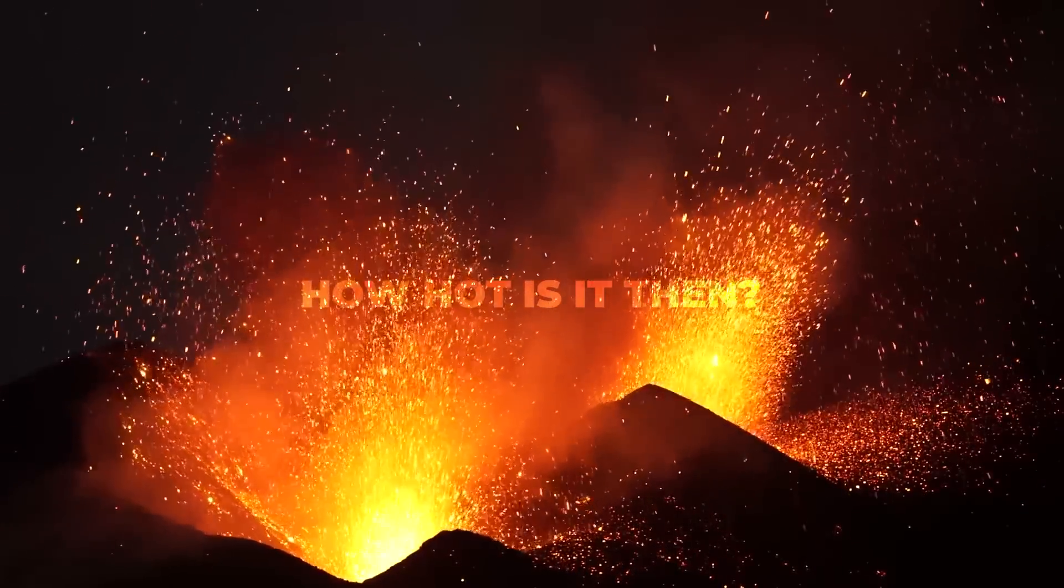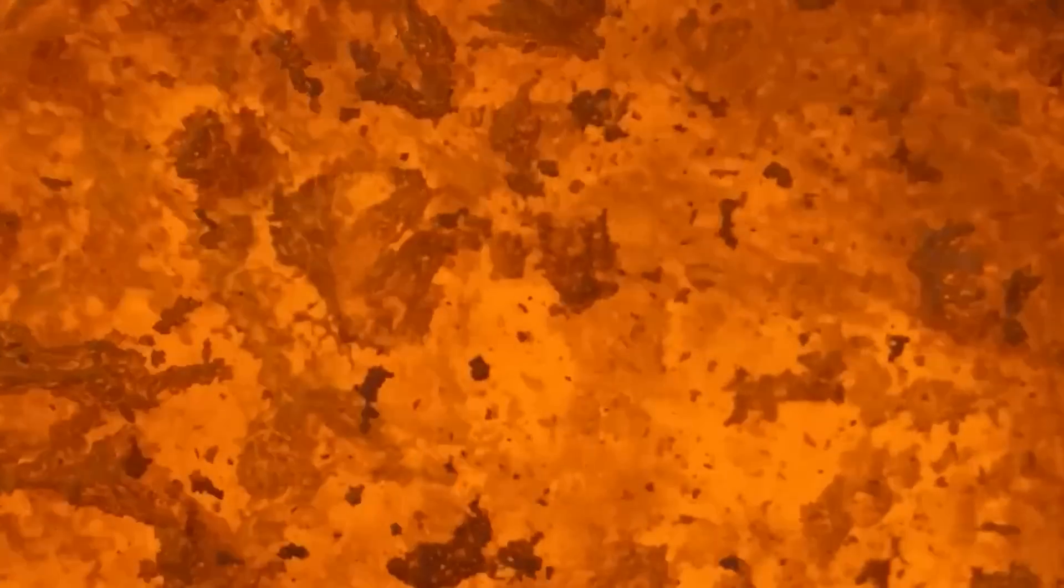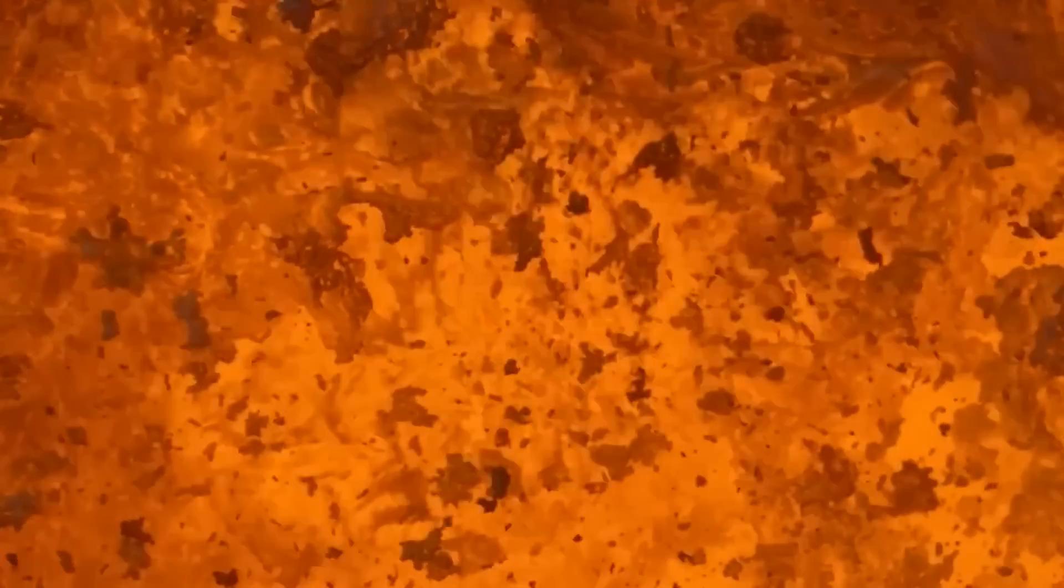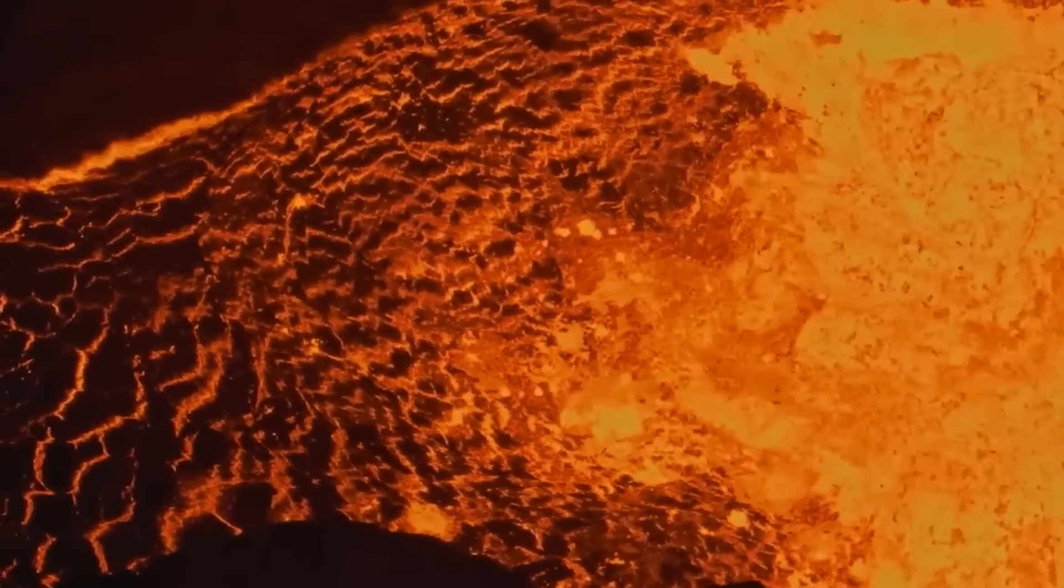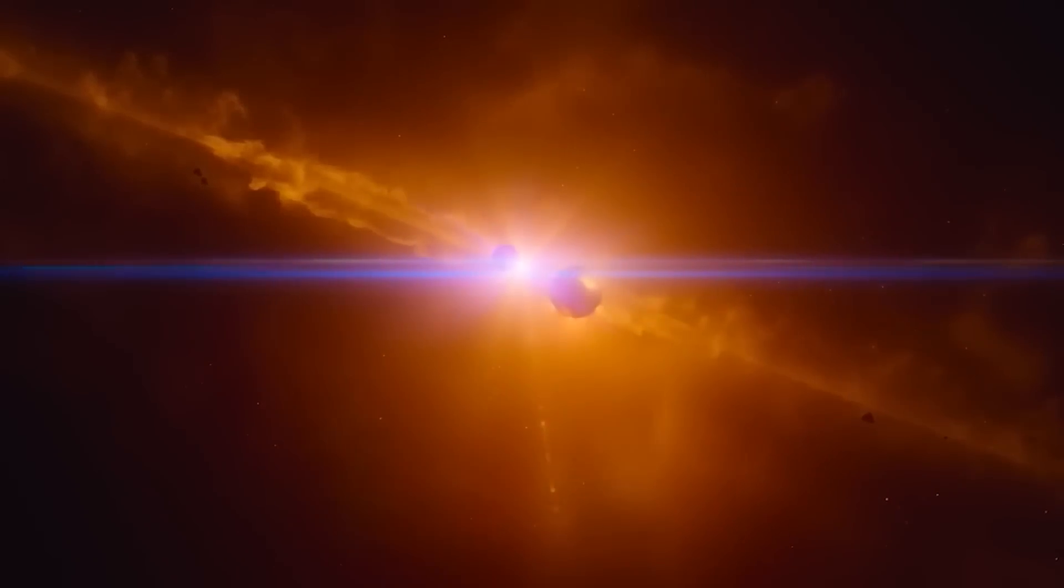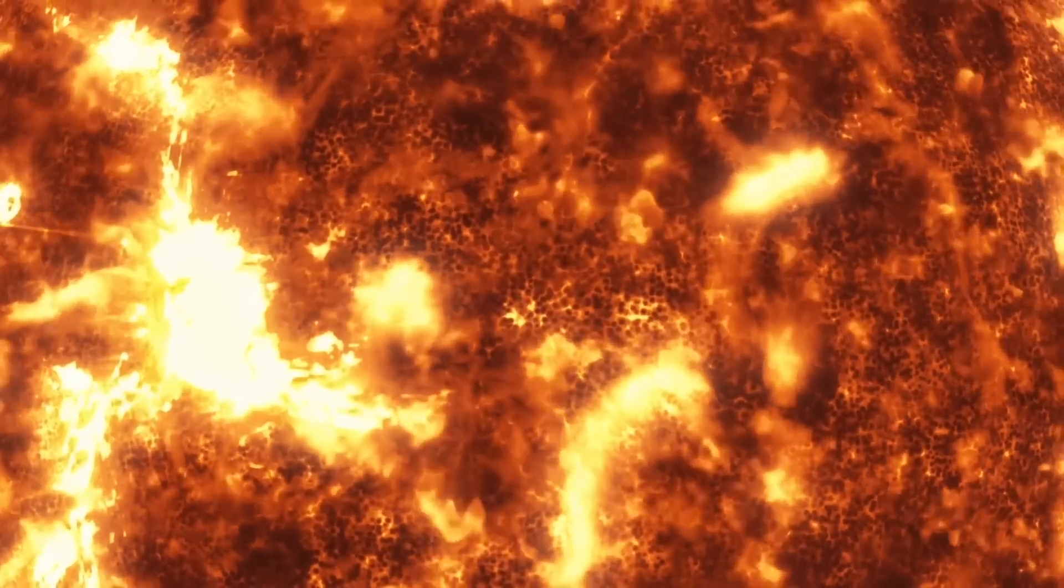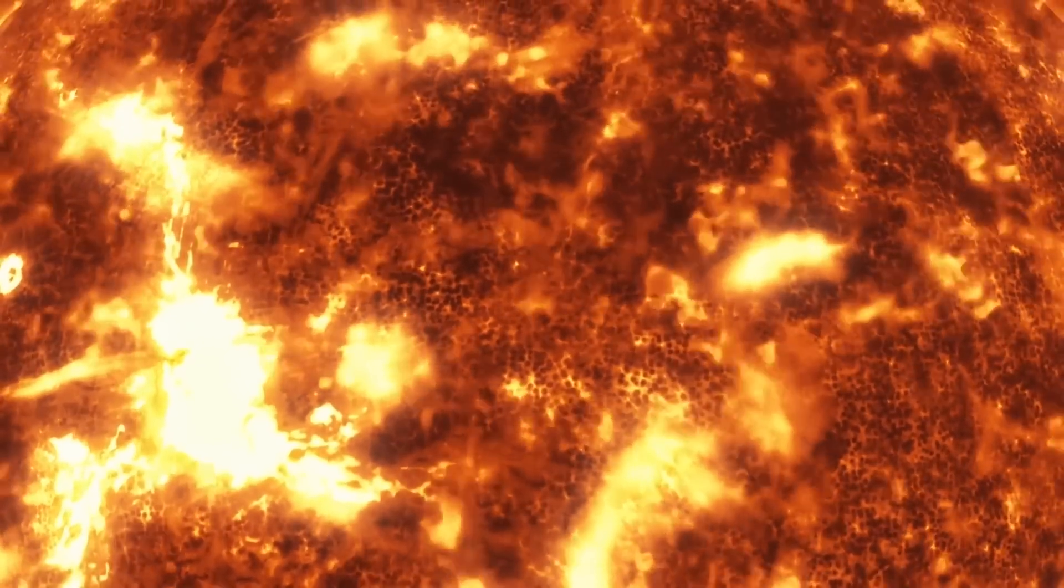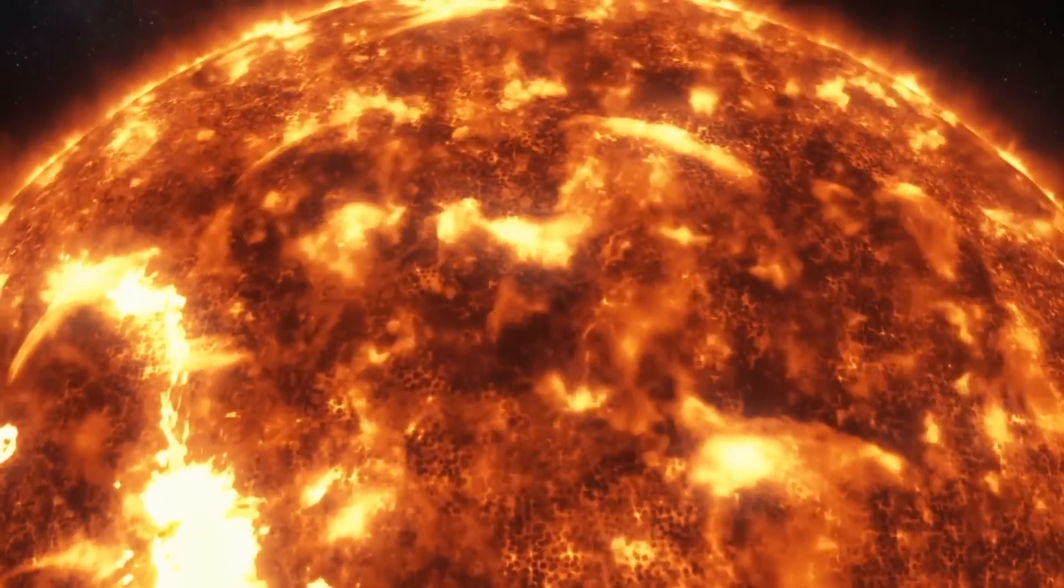The temperature on Kepler-70b reaches a mind-blowing 6650 degrees Celsius, that is 12,000 degrees Fahrenheit, since it is 65 times closer, 0.006 AU, to its star than Mercury is to the Sun. The surface of our Sun is just around 5,500 degrees Celsius hotter than that, or 10,000 degrees Fahrenheit.